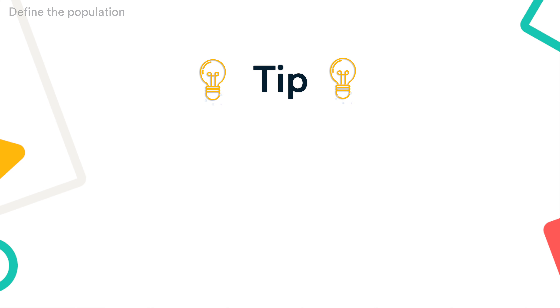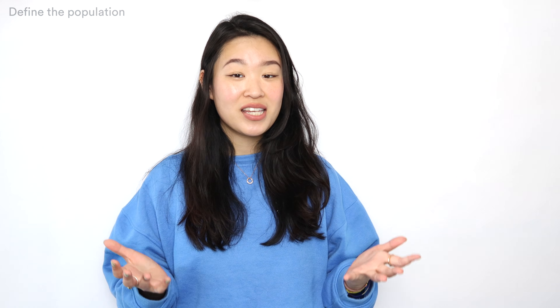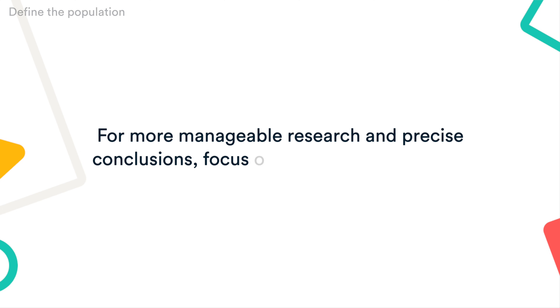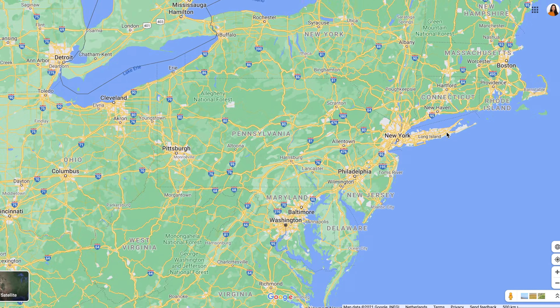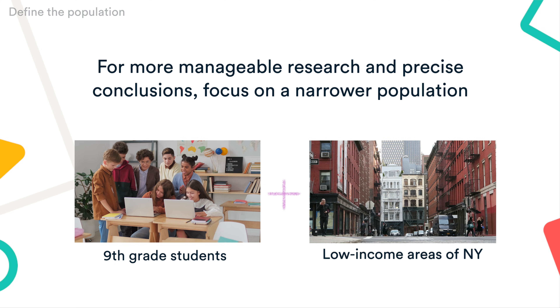Here's a tip: the more precisely you define your population, the easier it will be to gather a representative sample. For example, if you're studying the effectiveness of online teaching in the U.S., it would be very difficult to get a sample representative of all high school students in the country. To make the research more manageable and to draw more precise conclusions, you could focus on a narrower population — let's say 9th grade students in low-income areas of New York.